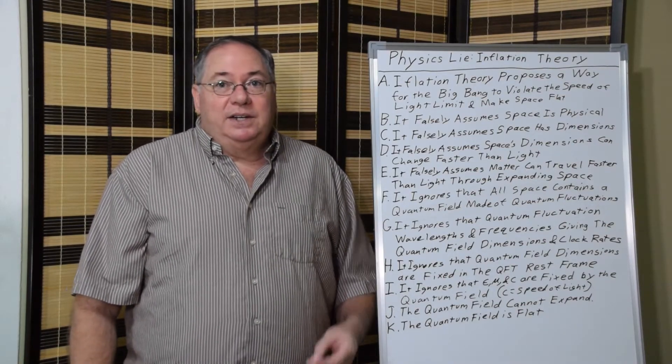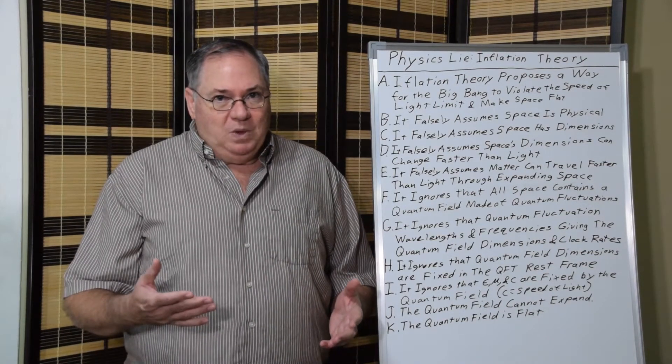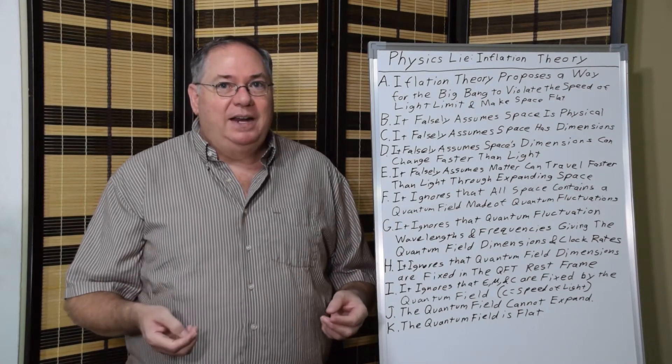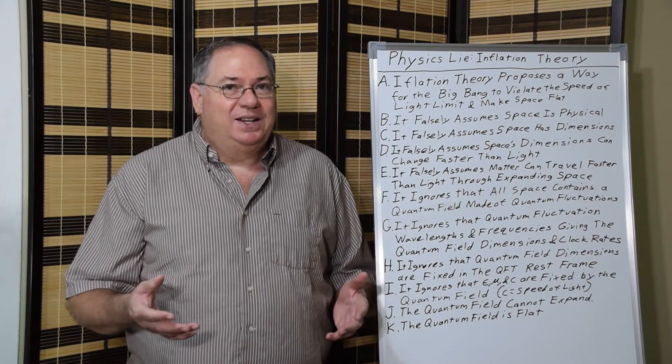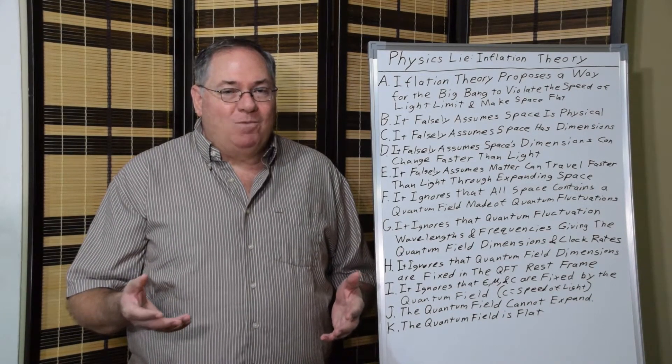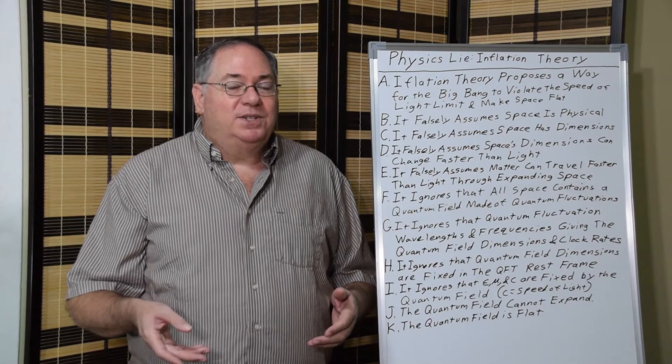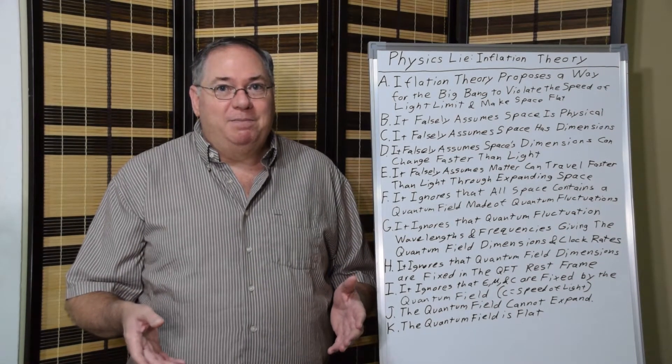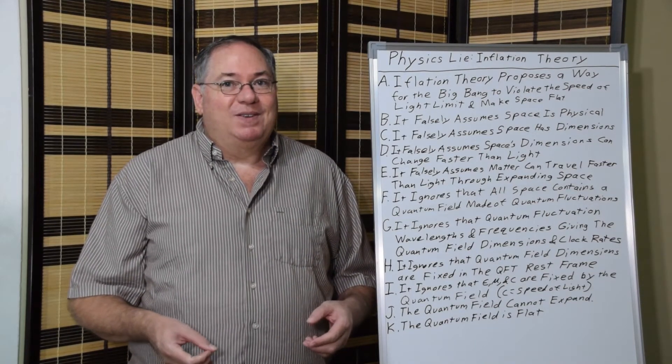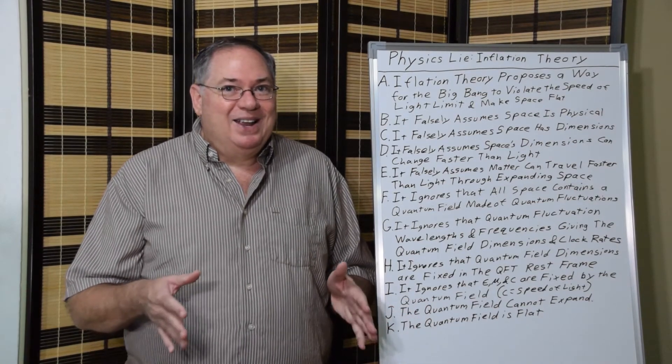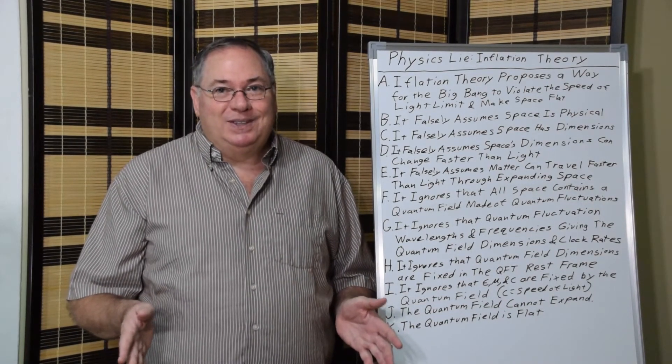So what happens is inflation theory is total nonsense. It's garbage. It always was garbage. Whenever you have a theory, come up with an idea, and you are doing tests on the theory to see if it might be viable, or a hypothesis to be more proper, and you find out that your hypothesis requires that the speed of light limit be violated for light or objects, then your hypothesis fails. It just flat out fails. When you violate the speed of light limit, you fail. That's it. Game over. Time to come up with a new hypothesis.